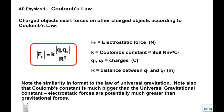Note the similarity in format to the law of universal gravitation. F sub G was big G times M1 times M2 over R squared, so it's got the same dependence on R. Gravitation is the force of attraction between two masses, while this is the force of attraction or repulsion between two charged objects. The biggest difference is in the magnitude of the constant — big G was on the order of ten to the negative eleventh, so we're talking about twenty orders of magnitude greater. Electrostatic forces are much, much stronger than gravity.